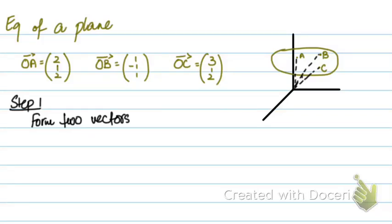Alright, so how do you form an equation of the plane when you are given 3 points on the plane? I have 3 points over here: OA is (2,1,2), OB is (1,-1,1), and OC is (3,1,2), and these 3 points lie on the same plane.